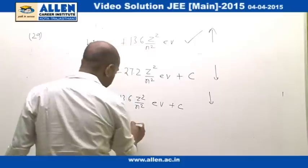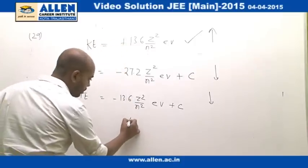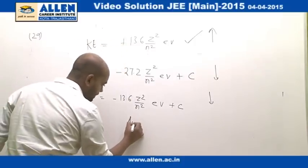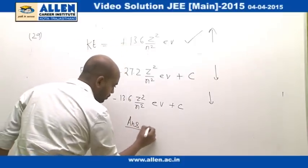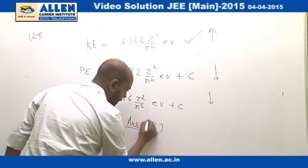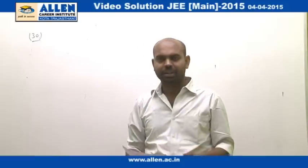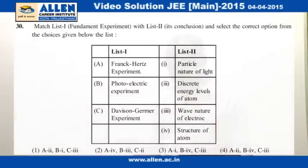So the potential energy will decrease, and the same thing is given in option number 3. So the answer to this question is option 3. Question 30 is purely based on information about experiments.